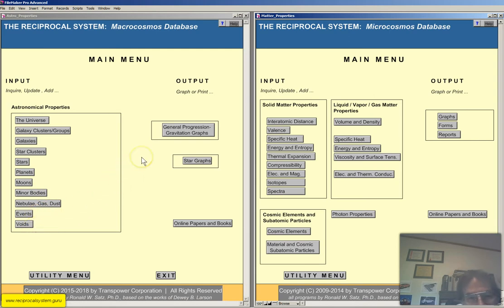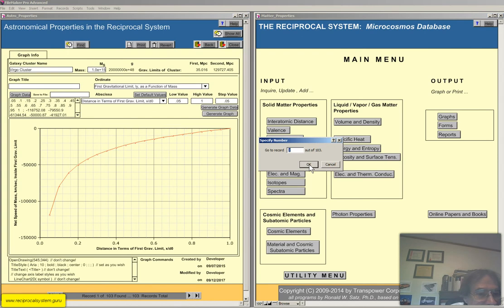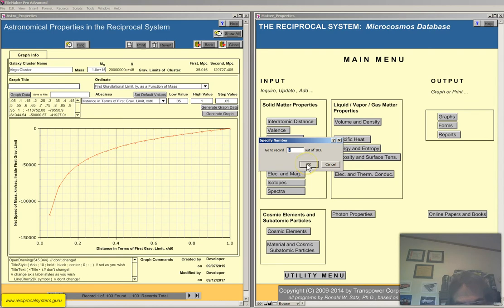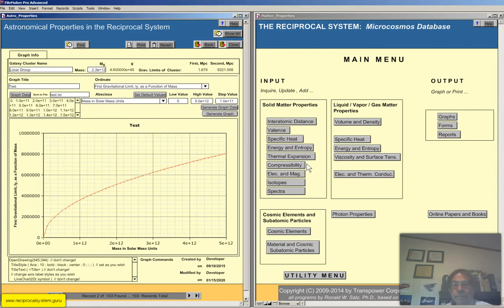So now we're going to go over to general progression and gravitation graphs. So I'll just click here. Now this is for galaxy clusters. The Virgo cluster is actually comprised of various galaxy groups, so the equations really don't apply to the Virgo cluster. But if I click here to specify the number, I'll get the local group.